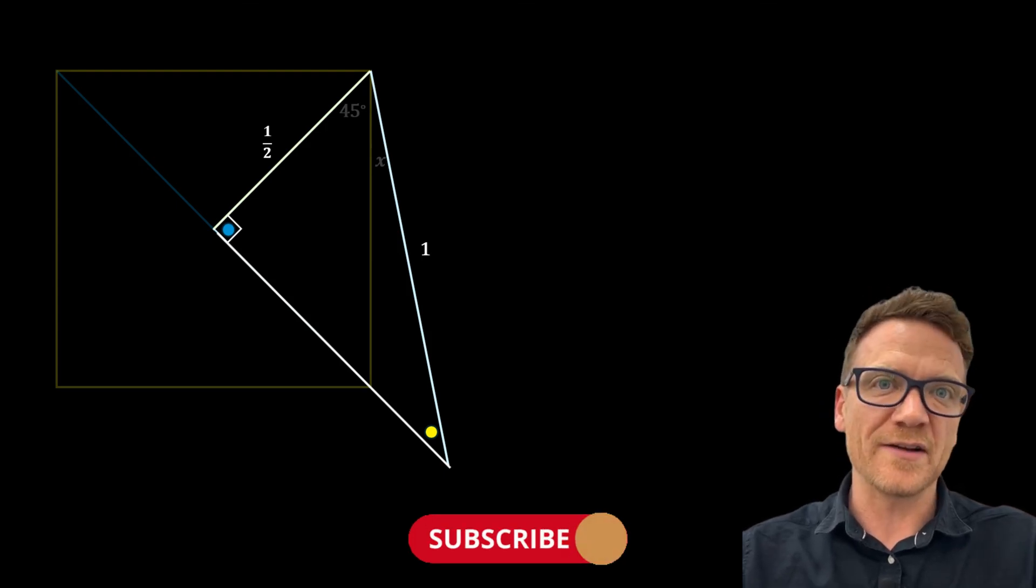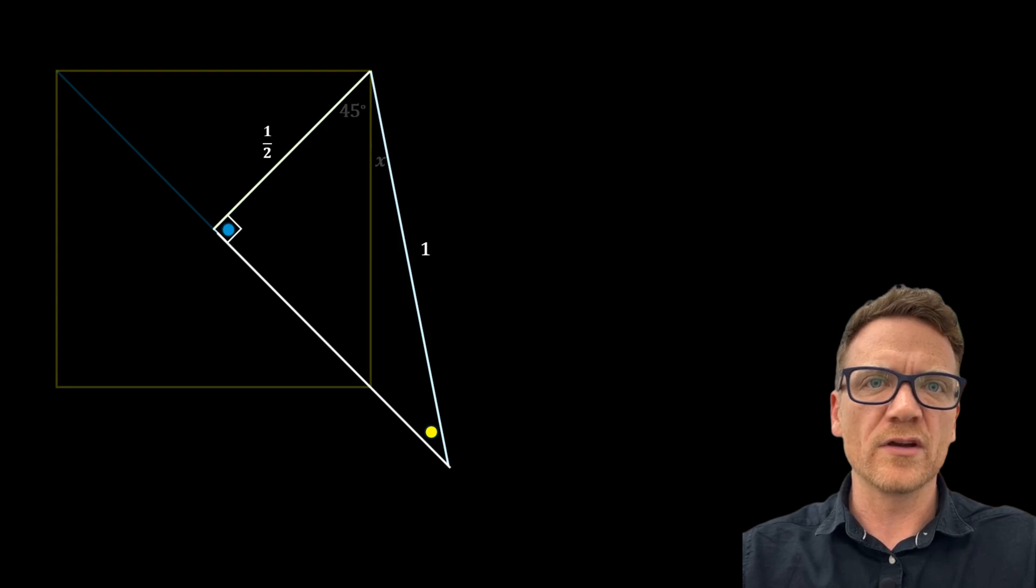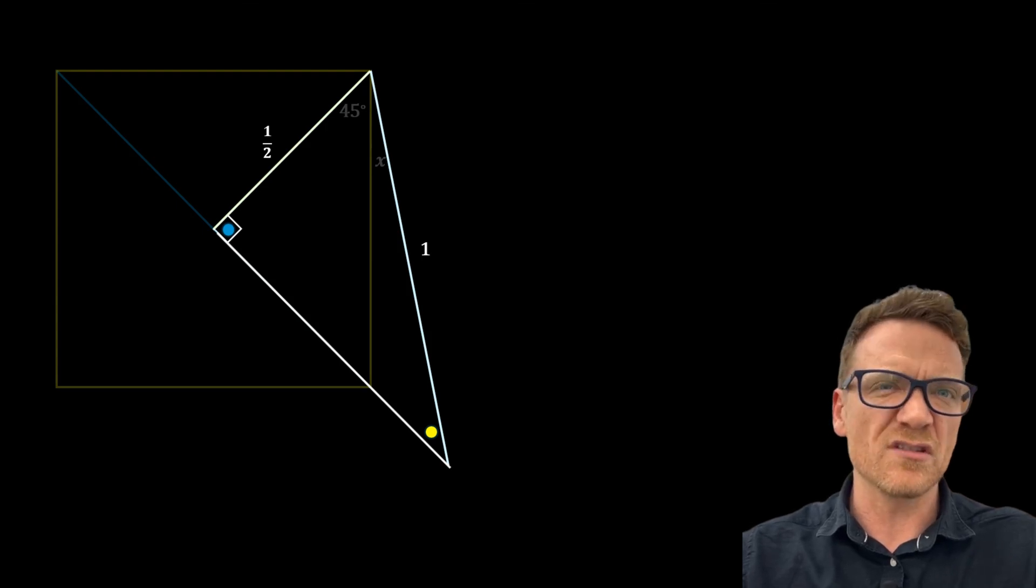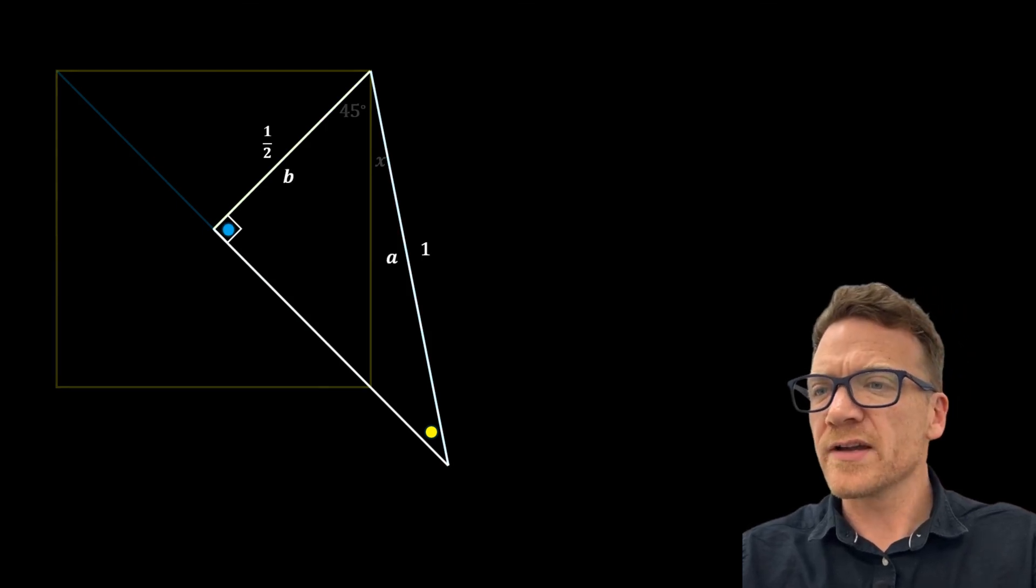This means that one of the angles is 30 degrees, but we can go ahead and use trigonometry to show this anyway. Using law of sines we can set up the equation of A over sine A is equal to B over sine B.